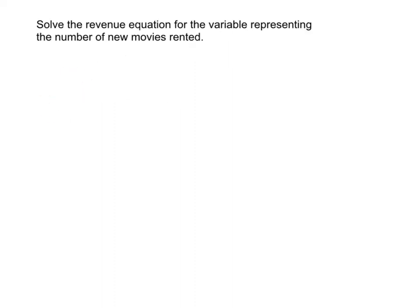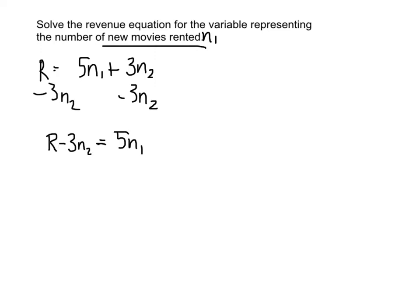Next, we're told to solve the revenue equation for the variable representing number of new movies rented. Let's take our equation and solve for N sub 1. Subtract 3N sub 2 from both sides, so we have 5N sub 1 on this side, and we want just N sub 1. Divide by 5 on both sides. This is our final answer for solving the revenue equation for new movies rented, N sub 1.